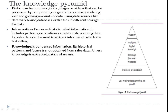The next layer is knowledge. Knowledge is nothing but condensed information. Unless knowledge is extracted, the data is of no use. So if we consider the same sales data — from the raw sales data we extracted information about fast-selling products — now if we analyze the historical patterns of that fast-selling product and determine what the future trend of that product will be, then that becomes knowledge. Knowledge is condensed information.